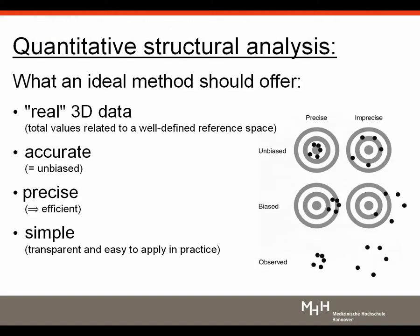The ideal method of lung quantification should provide real three-dimensional data, reporting total values related to a well-defined reference space — in our case, almost always total lung volume. The data should be accurate, meaning unbiased. Think of a bull's eye as the true value: an unbiased data set converges around the bull's eye even with some scatter, while a biased data set has a systematic deviation from the true value regardless of its precision.